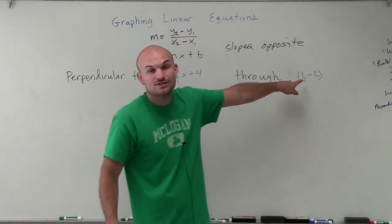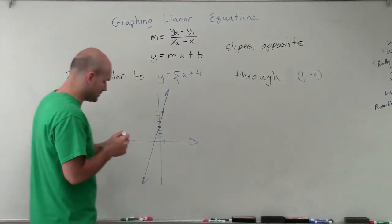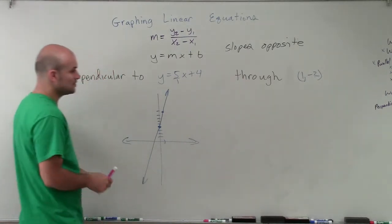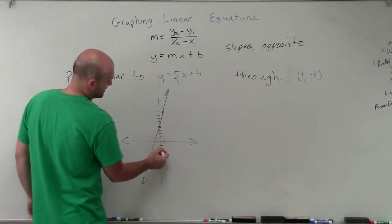Now I know the point has to go through, or my new perpendicular line, which I'll color in pink, has to go through the point 1 comma negative 2.